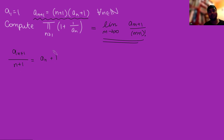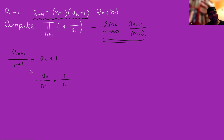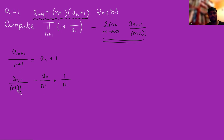Here's where the magic happens. We divide both sides by n!. On the right-hand side we get a_n/n! + 1/n!. On the left-hand side, dividing a_{n+1}/(n+1) by n! gives a_{n+1}/[(n+1)·n!] = a_{n+1}/(n+1)!. So we've got that a_{n+1}/(n+1)! = a_n/n! + 1/n!.